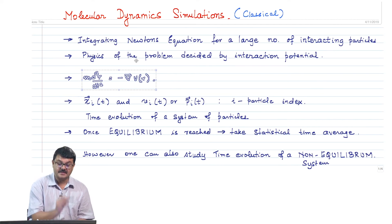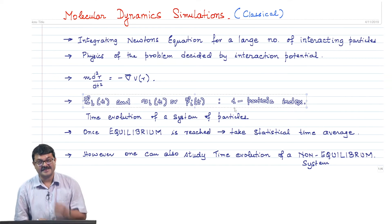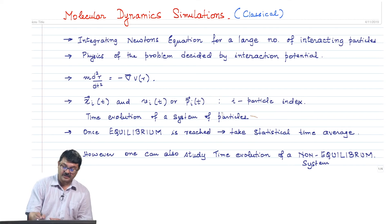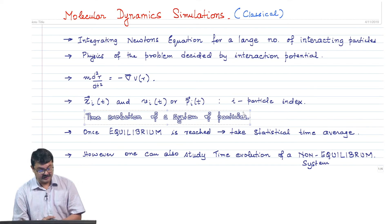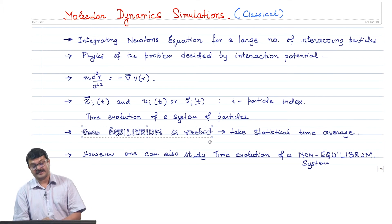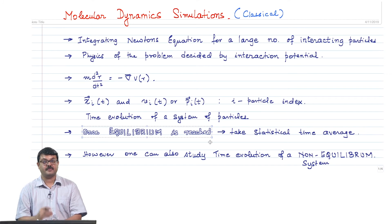Solving this second-order differential equation gives you positions and velocities as a function of time, where i is the particle index. In molecular dynamics simulations you are essentially looking at the time evolution of a system of particles. If you are doing statistical physics, once equilibrium is reached you can take the statistical time average — basically a time average in molecular dynamics simulations. In Monte Carlo simulations of the Ising model, which we discussed previously, you are taking the ensemble average.